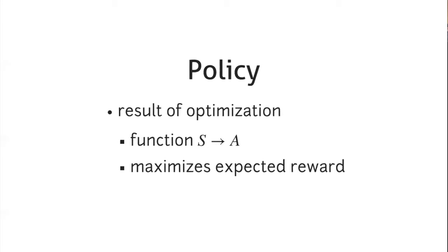One important thing that makes stochastic optimization different from normal optimization is that we don't ever just get a single number out or a single list of things to do. Instead, we get something called a policy. Because we never know step to step what state we'll end up in, we have to optimize and figure out the optimal thing to do from every single possible state. The result of optimization is actually a function itself — the function we run to make decisions as we execute the results. This framework is also used in robotics motion planning: you do complex offline optimization, produce a function that tells the robot how to react to the outside world, allowing the agent to act optimally with substantially less runtime computation.